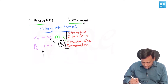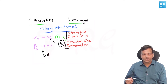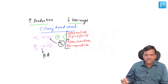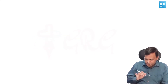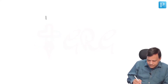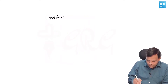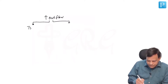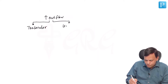Beta blockers can also be used for decreasing the production of aqueous. Beta-2 causes vasodilation, so when we block beta-2, vasoconstriction occurs and aqueous production decreases. These are the drugs which can decrease production. Coming to drugs which can increase drainage — increase the outflow — aqueous outflow can be increased by two main types: one which increases trabecular outflow and second which increases uveoscleral outflow.